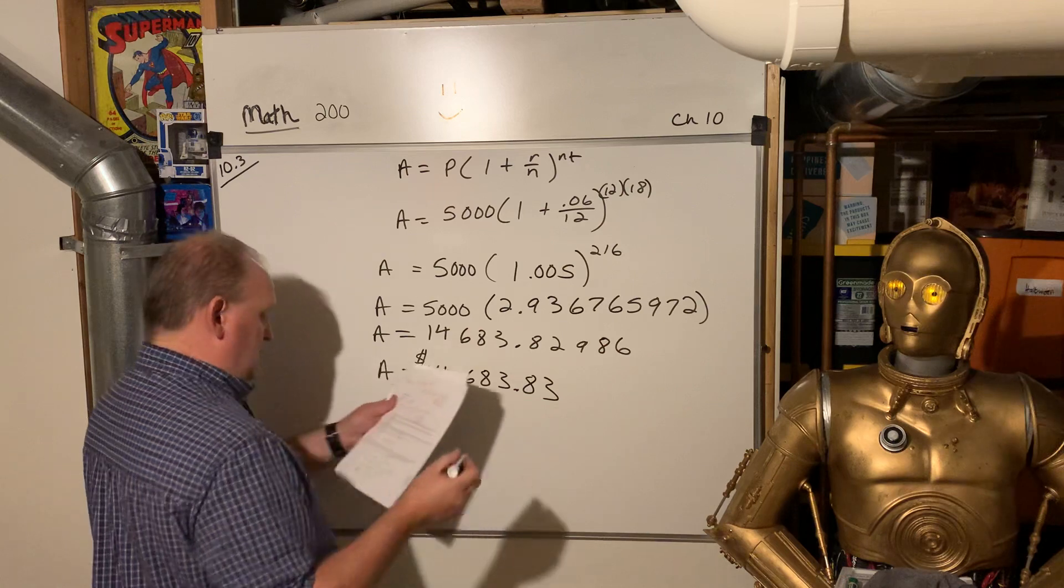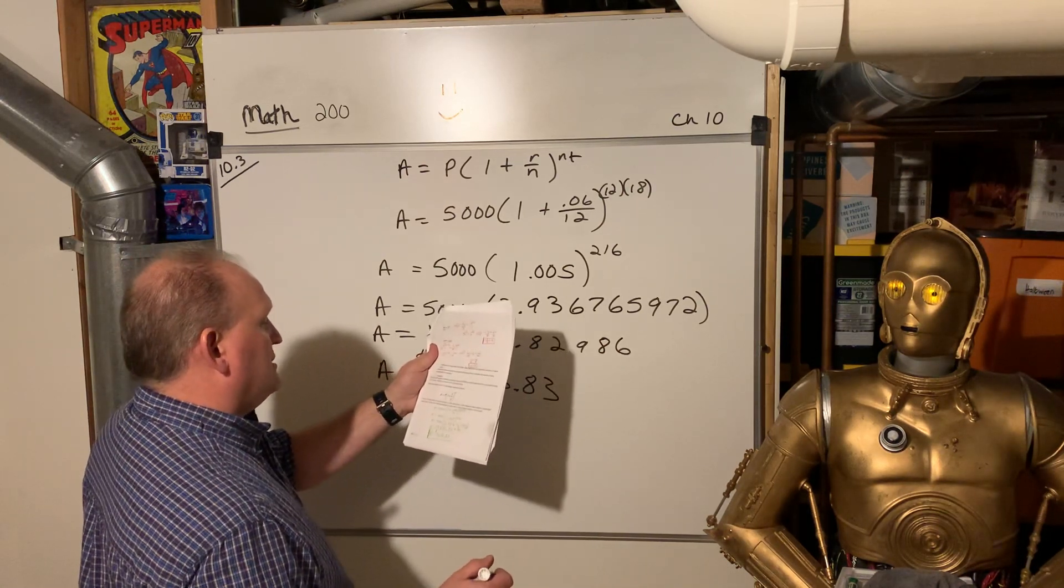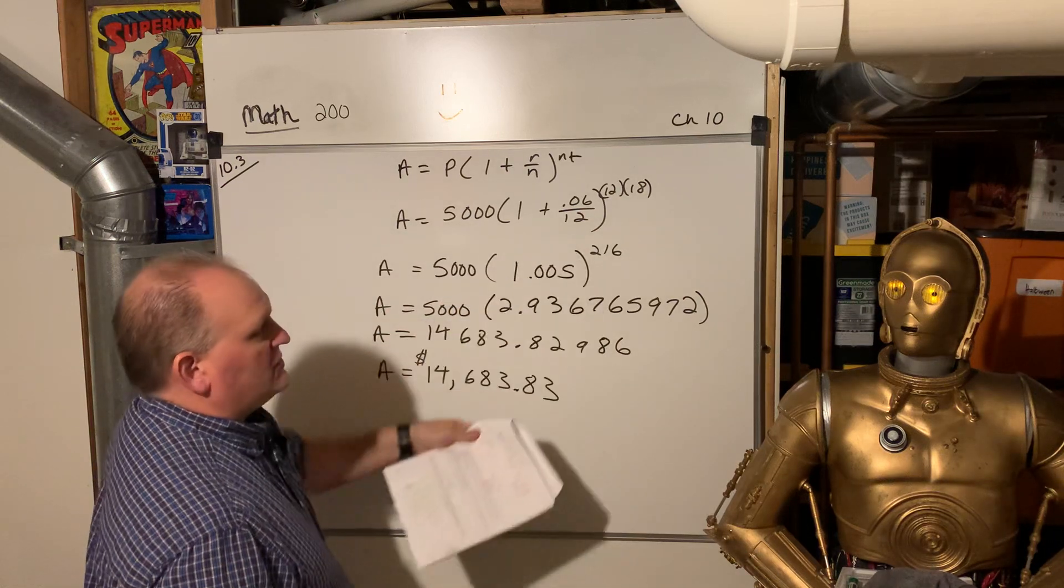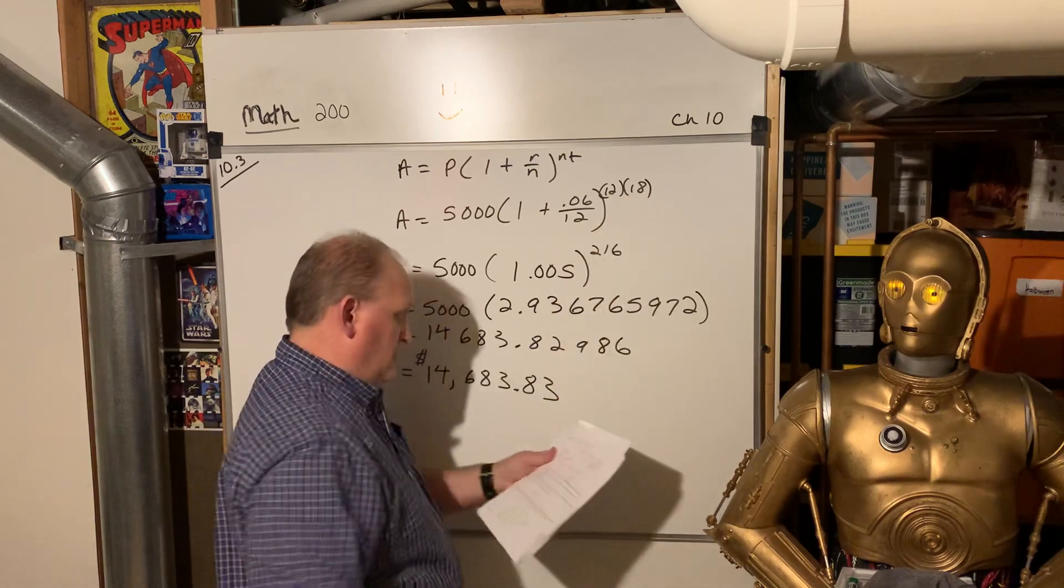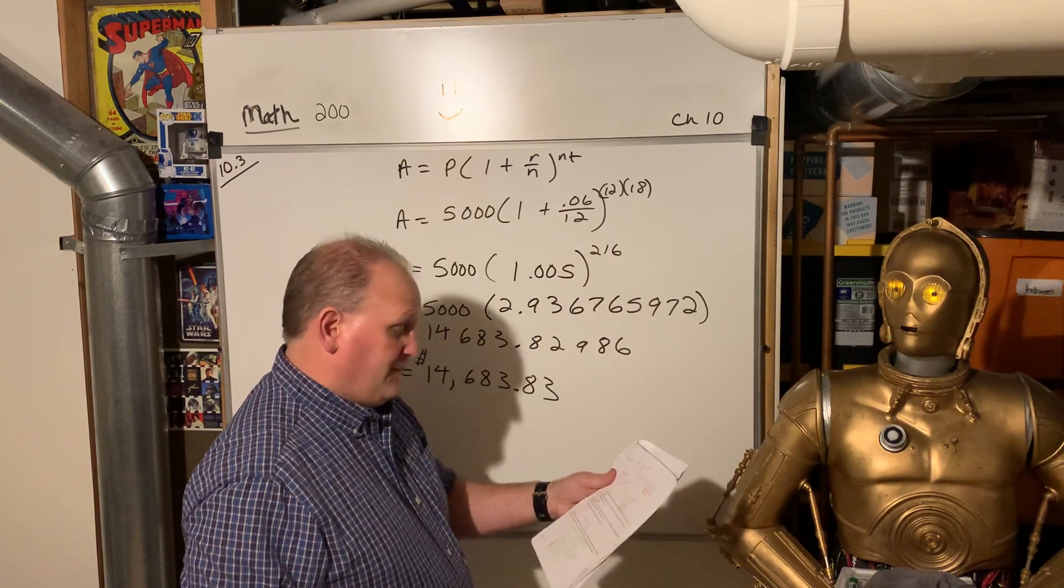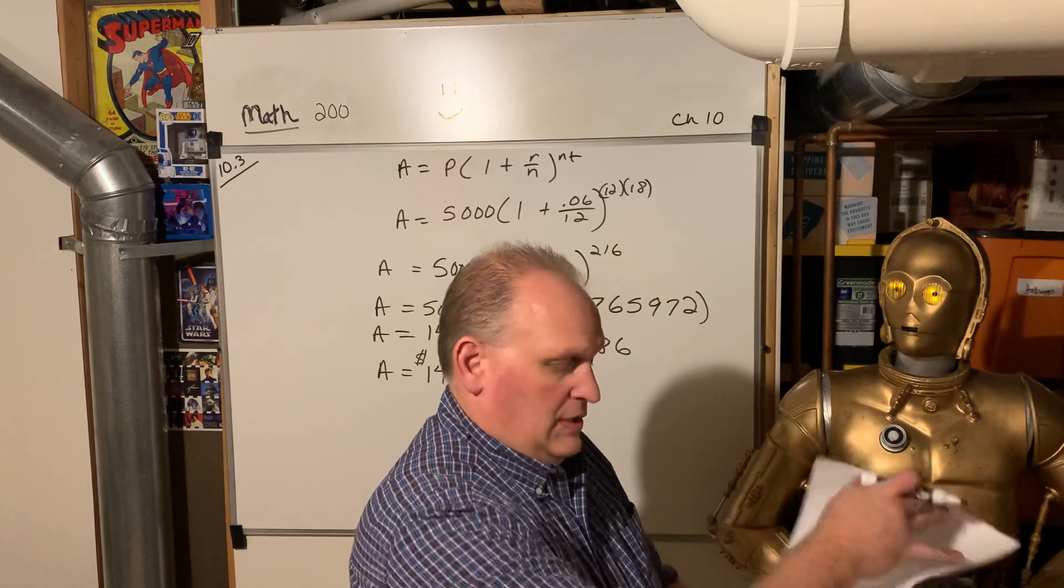So that was on page 10 of the notes, example J. It gave you the 5,000, the 6% compounded monthly. That's why the 12s are there for 18 years. Okay.